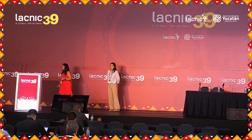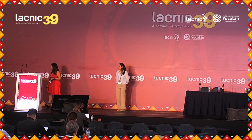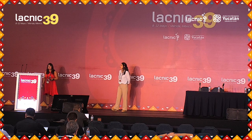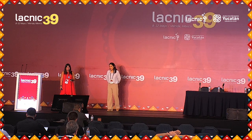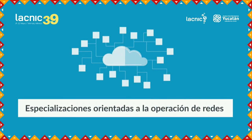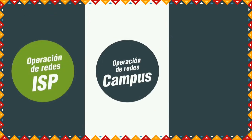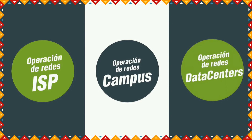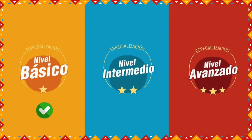Now let's look at the interesting part: the specializations. LACNIC campus now offers specializations addressed at network operations — natural ISP network operations, campus network operations, and data center network operations. Each specialization has three levels: basic, intermediate, and advanced. Once you complete all levels in the specialization you're interested in, you can take an integrated examination to obtain your certification.